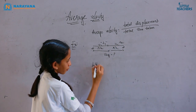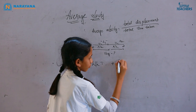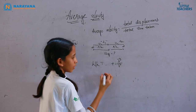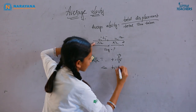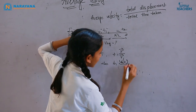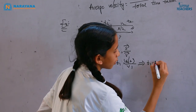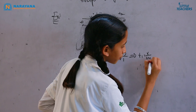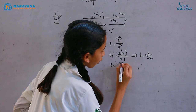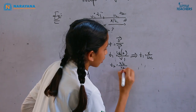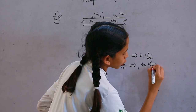We know that time equals displacement divided by velocity. So T1 = (x/2) / v1, which implies T1 = x / (2v1). And T2 = (x/2) / v2, which implies T2 = x / (2v2).